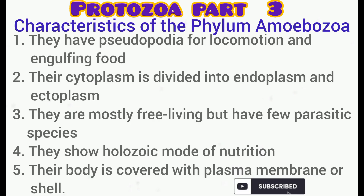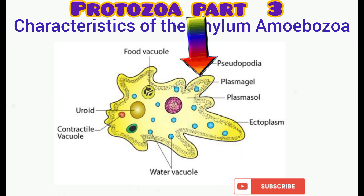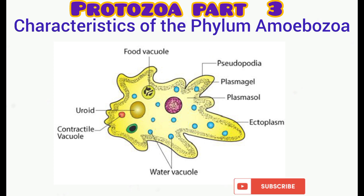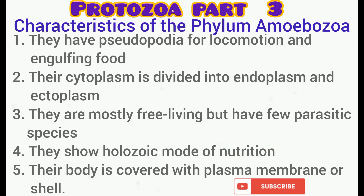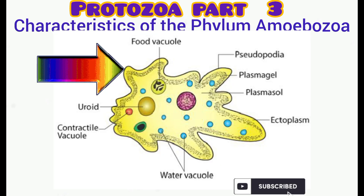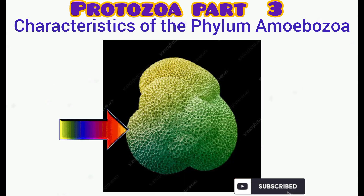What are the characteristics of the phylum Amoebozoa? They possess pseudopodia for locomotion and for engulfing food. The cytoplasm is divided into ectoplasm and endoplasm. The majority are free-living, though there are a few parasitic species. They exhibit a holozoic mode of nutrition and their body is covered with a plasma membrane or shell.